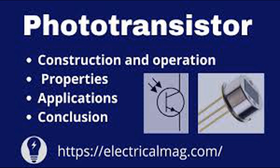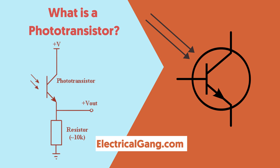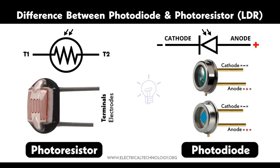Schottky phototransistors incorporate a Schottky barrier (a metal-semiconductor junction) in the phototransistor design. The Schottky barrier reduces the response time, making the phototransistor faster. Used in high-speed applications like optical communication and fast switching circuits. Avalanche phototransistors operate in the avalanche breakdown region, where a high reverse bias voltage is applied. When light hits the base region, it generates electron-hole pairs that trigger an avalanche multiplication effect, greatly amplifying the current. Used in applications requiring very high sensitivity and gain, such as scientific instruments and low-light detection systems.